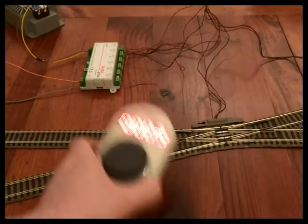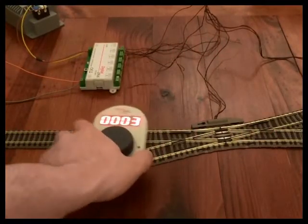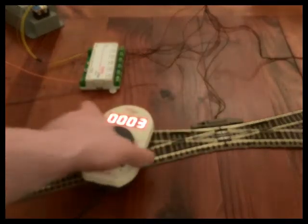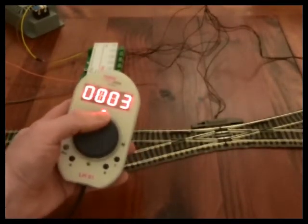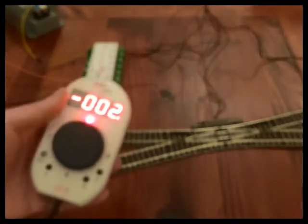So in this film I'm going to have a look at using the new LH-01 handset to control points. Now the points menu is up at the top, so you press and hold and you go into the points menu.